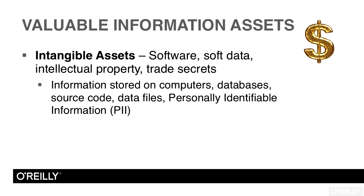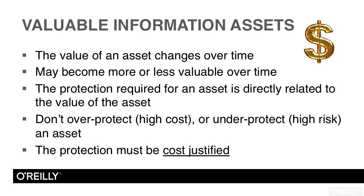The second class deals with intangible assets, meaning they are not physical. This includes software and information stored on computers — called soft data — as well as intellectual property, trade secrets, source code, data files, and personally identifiable information that might be stored on customers, vendors, or suppliers.